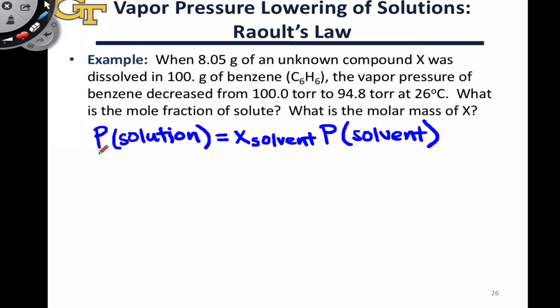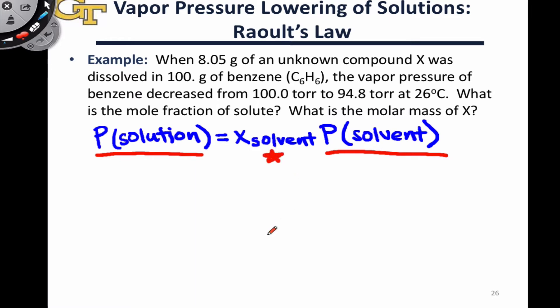If we're able to measure the vapor pressure over a solution and we know or are able to measure the vapor pressure of the pure solvent, then we can determine the mole fraction of solvent in a solution with some unknown properties, and that's the idea in this problem here.